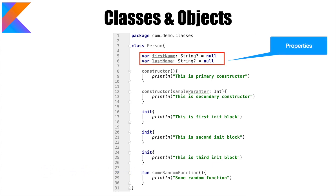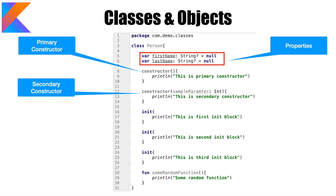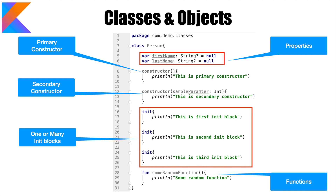You can have something called attributes, which are also called as properties or instance variables of the class. In this case you can see that the class Person has got first name and last name. Then you have a primary constructor — a constructor without any parameters. Or you can also have a secondary constructor, which is a parameterized constructor. A class can have any number of constructors, so in reality you may see one primary constructor and many secondary constructors, depending upon the signature of the parameters in each constructor. Then you see init blocks, and you can have one or more init blocks in a class. Finally you have some functions, which are typically called as methods in Java.